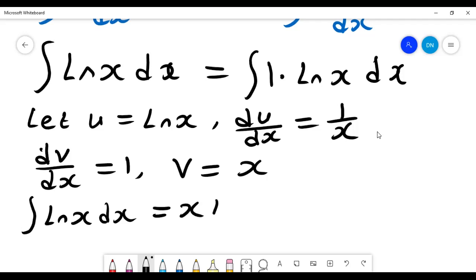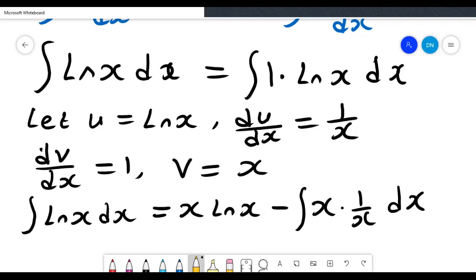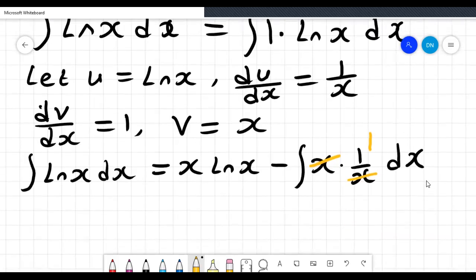This equals x ln of x minus the integral of v times du dx. Clearly we can see here that the x and the x will cancel out, so we'll be left with one, and the integral of one dx will give us x.